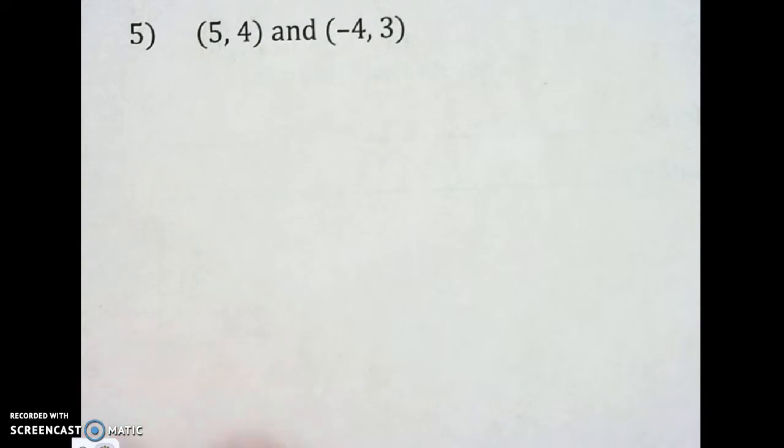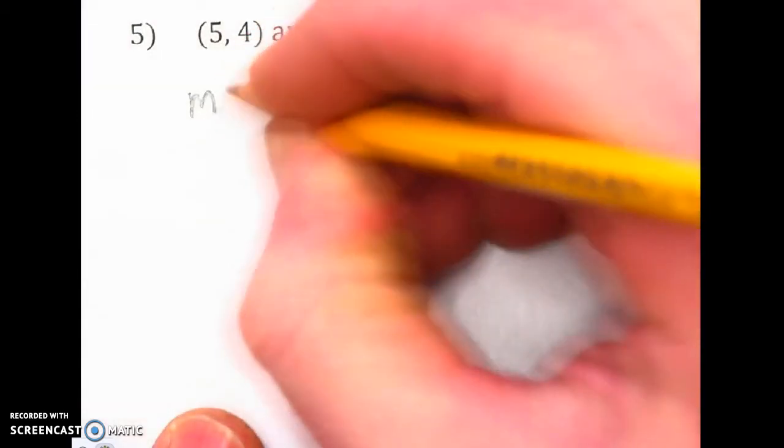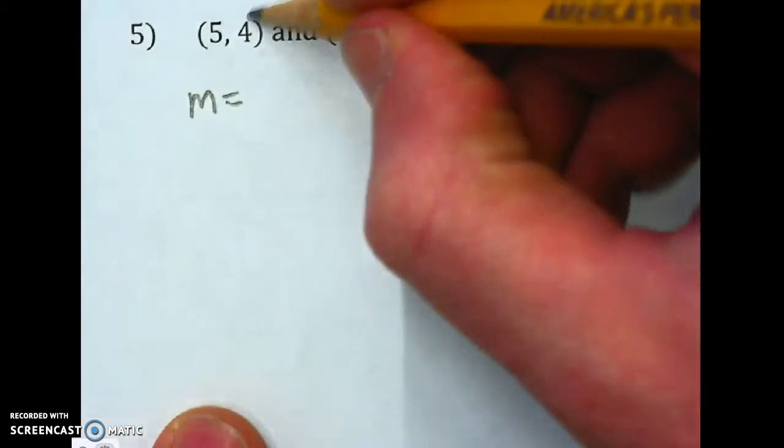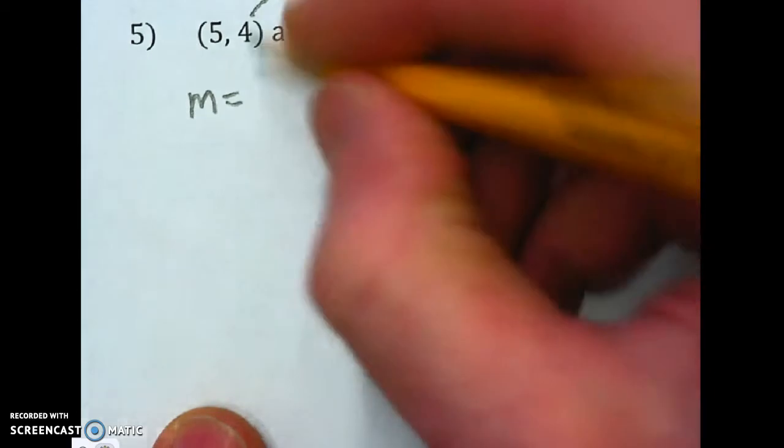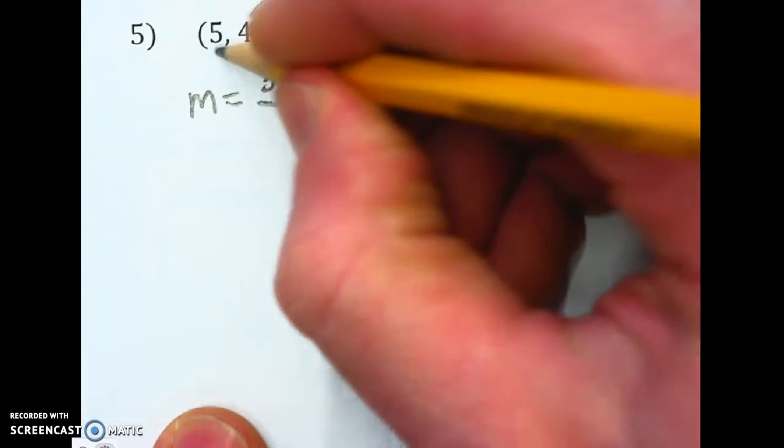Let's take a look at this. We need to find two things: the slope and the y-intercept. So let's start by finding the slope and subtracting our y's. I'm going to take the y's and subtract them, so that'll be 3 minus 4 over the x's.